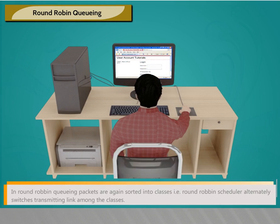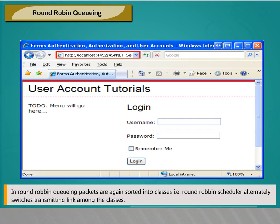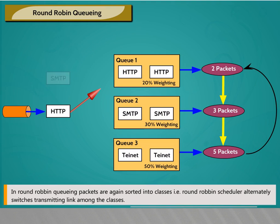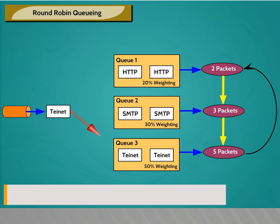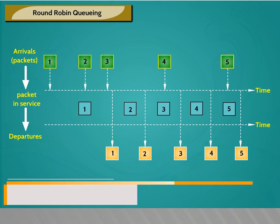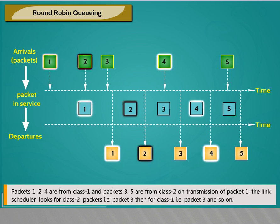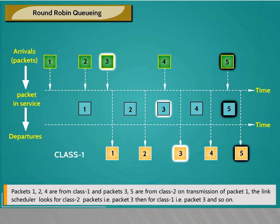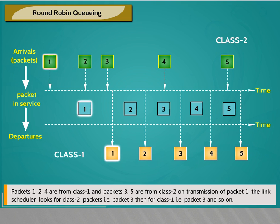Priority queuing. In priority queuing, packets arriving are classified into two or more priority classes. Each priority class has a separate queue. The packet from the highest priority queue is selected for transmission. Among the same priority class, packets are selected in FIFO manner. High priority class packets are transmitted before low priority class packets.